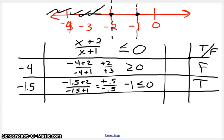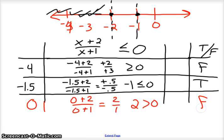And just to make sure, we better check that third region over there on the right. And again, I'm going to pick 0. And so, 0 is real easy. 0 plus 2 over 0 plus 1. That's 2 over 1. That's greater than 0. So, that is, again, false. Numbers to the right of that don't work. So, again, we're looking for this area in between negative 2 and negative 1.